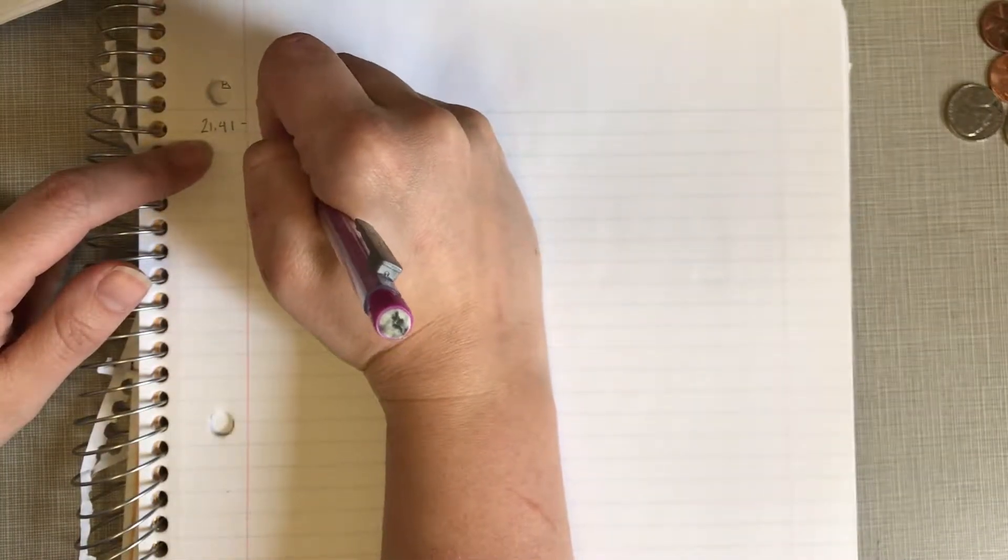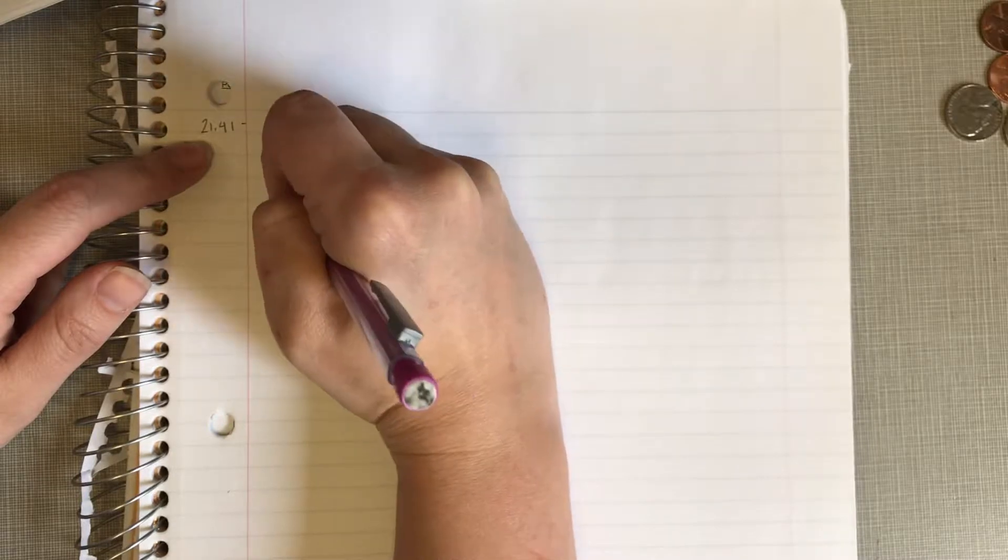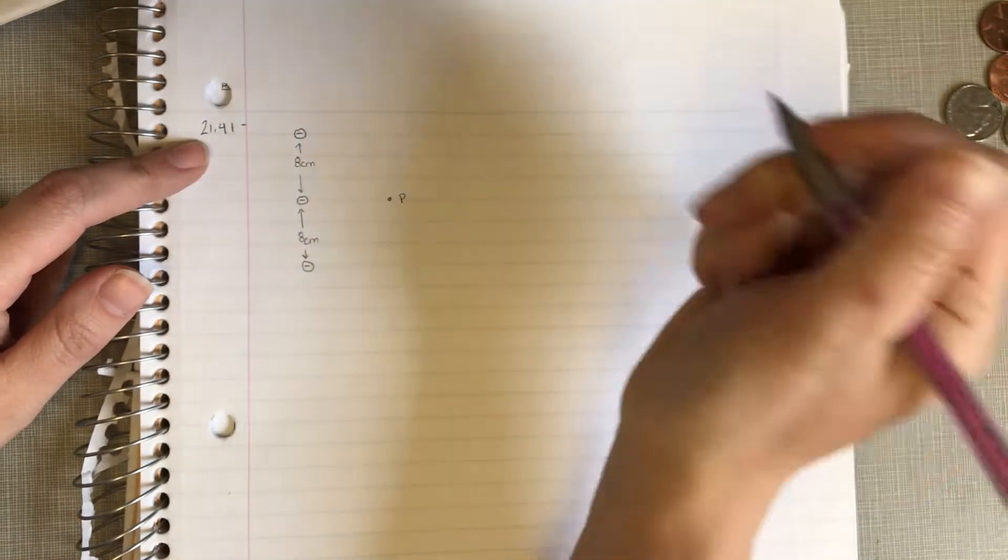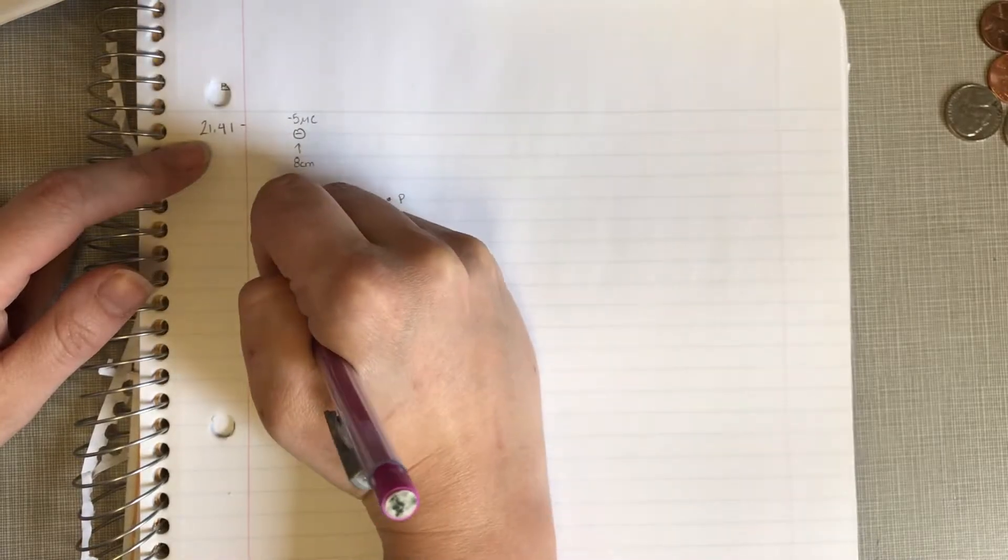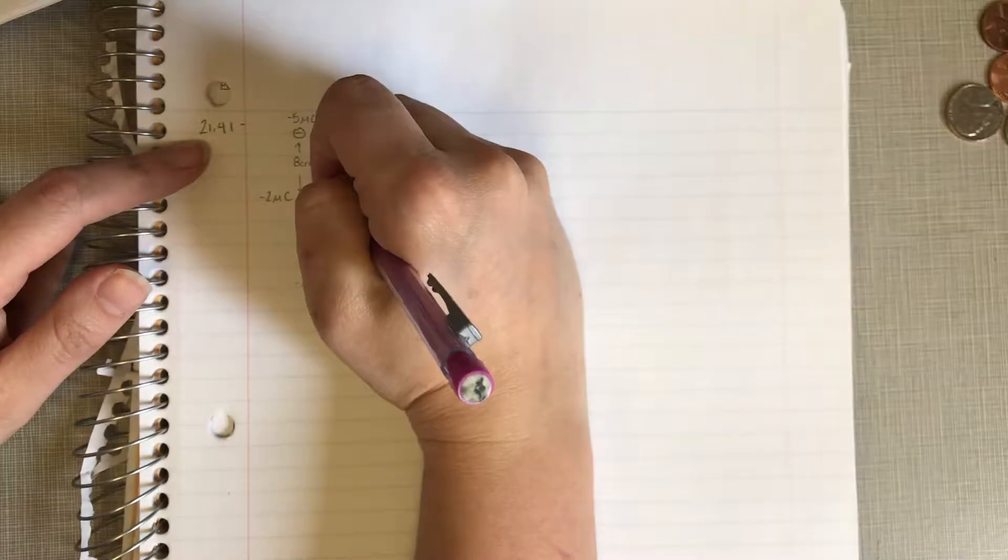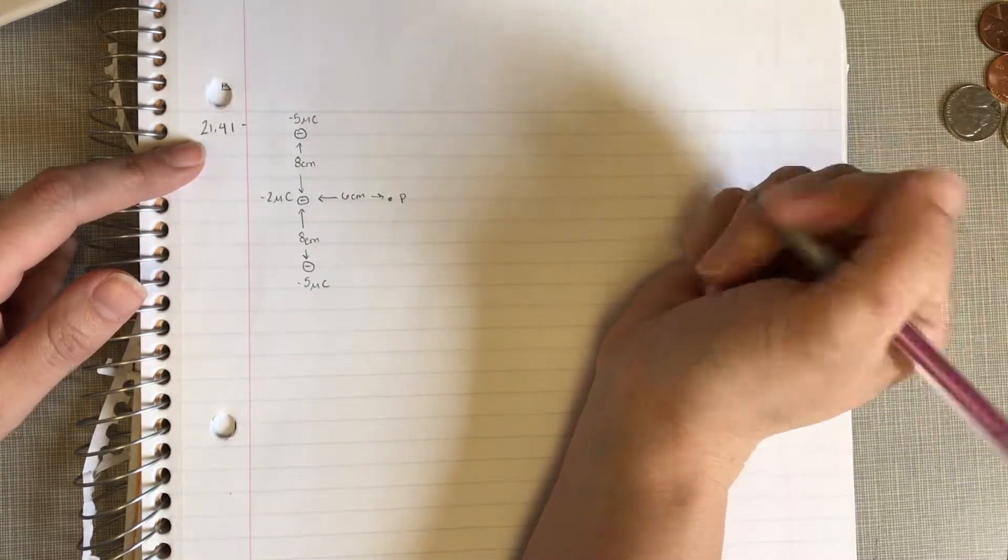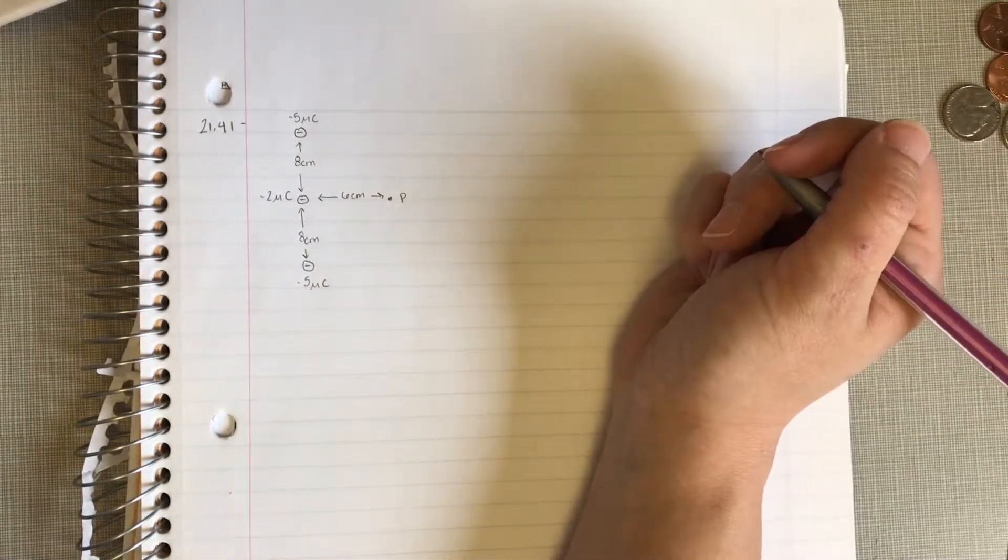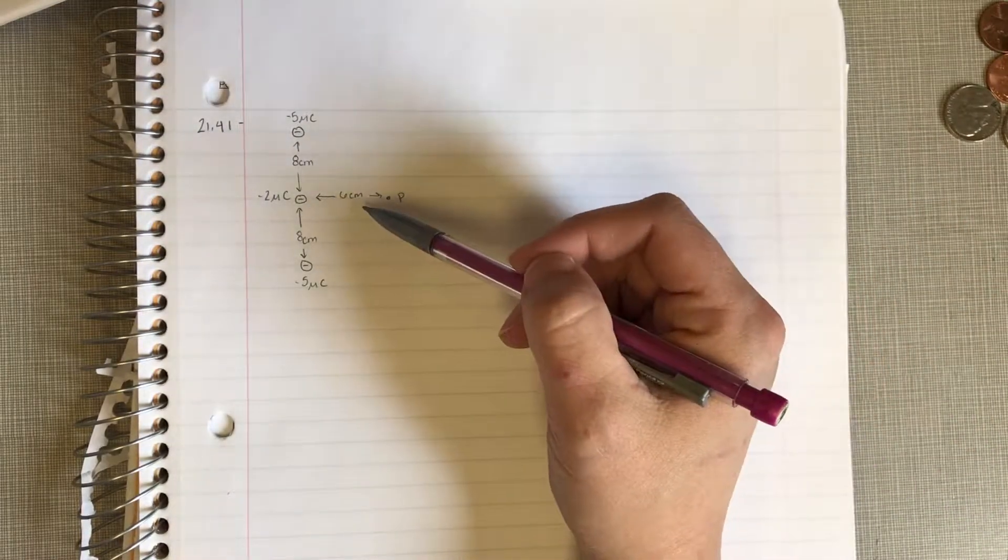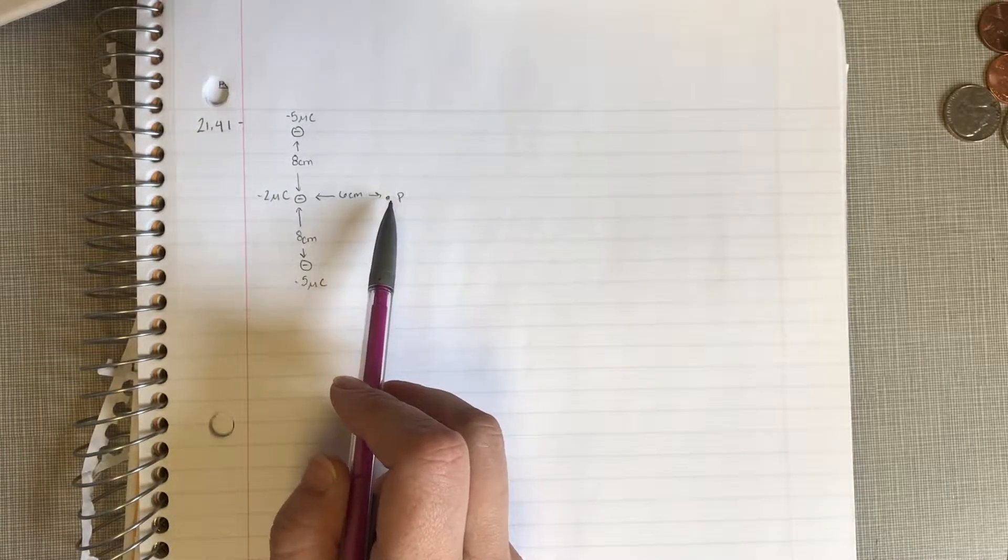They are 8 centimeters away from each other. And then we have point P over here. This guy is negative 5 microcoulombs, this guy is negative 5 microcoulombs, and this guy is negative 2 microcoulombs. Point P is 6 centimeters away from here. So note that this is not to scale because I don't know how to draw. Okay, so we want to find the magnitude and direction of the electric field that this combination of charges produces at point P, which lies 6 centimeters from the negative 2 microcoulombs charge, measured perpendicular to the line connecting the three charges.